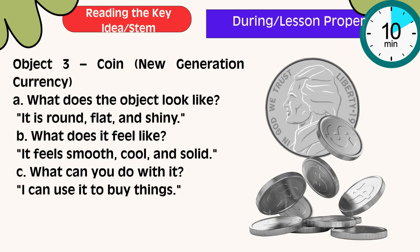Object number 3: Coin. What does the object look like? It is round, flat, and shiny. What does it feel like? It feels smooth, cool, and solid. What can you do with it? I can use it to join pieces of wood. I can use it to buy things.